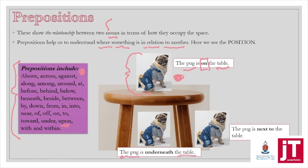The pug is underneath the table. Note, nothing else in these sentences is changing — the only thing that is changing are the prepositions. Underneath the table — do you see how this pug has now moved? His position in relation to the table has changed. That is what prepositions are all about. They help us see how one noun is in relation to another. We could also say beneath the table, or below the table.